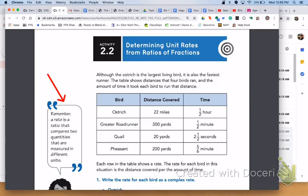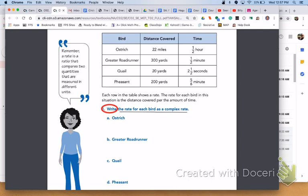Please turn to page 62, activity 2.2, determining unit rates from ratios of fractions. Although the ostrich is the largest living bird, it is also the fastest runner. The table shows distances that 4 birds ran and the amount of time it took each bird to run that distance. Please remember that a rate is a ratio that compares two quantities that are measured in different units. Each row in the table shows a rate. The rate for each bird in this situation is the distance covered per the amount of time. Please answer number 1, A through D, with your group.